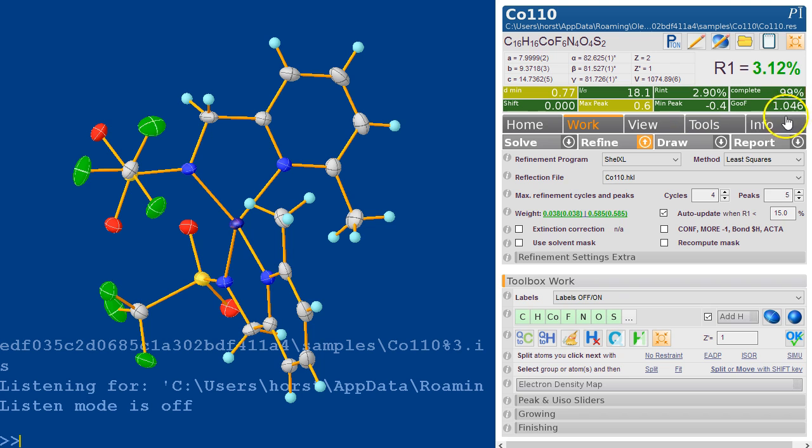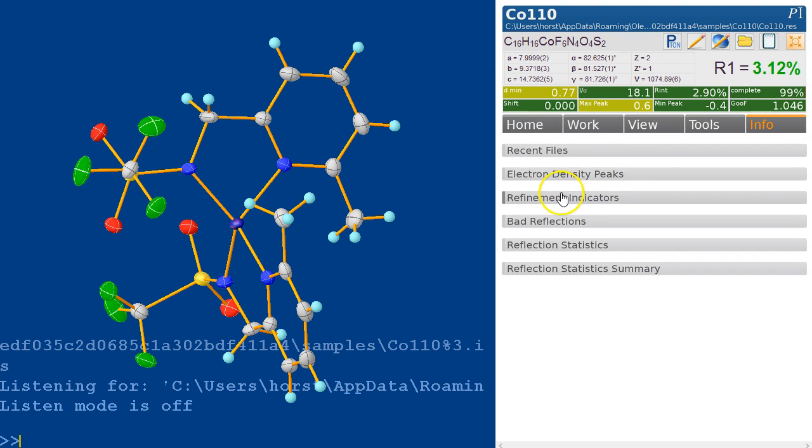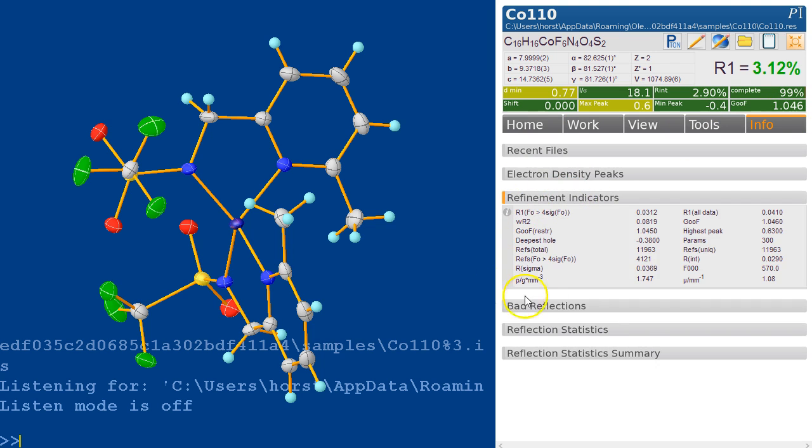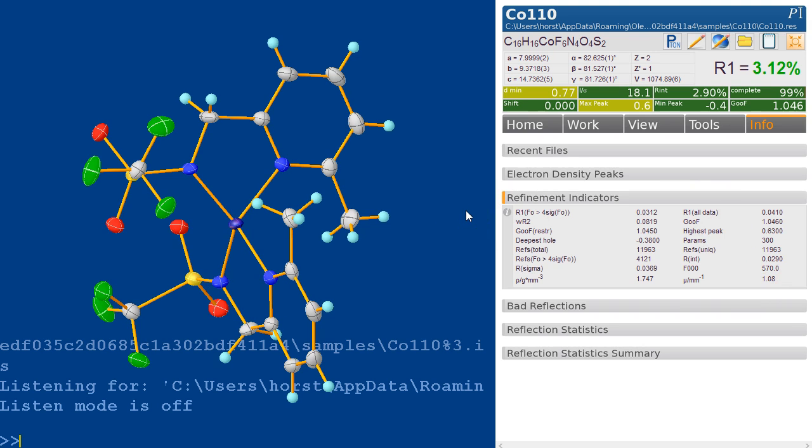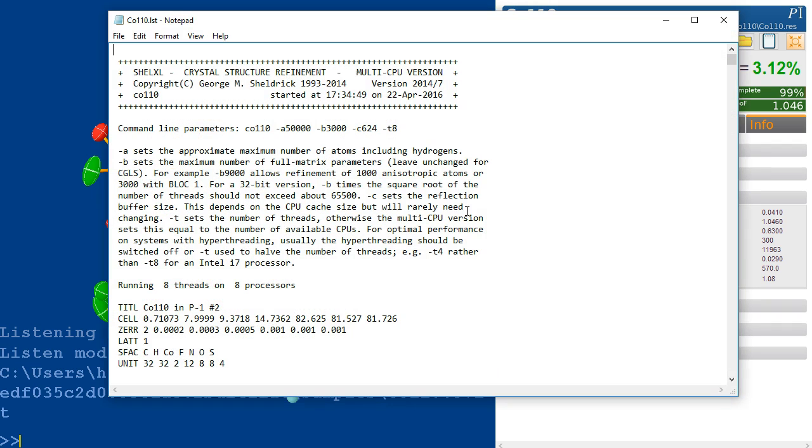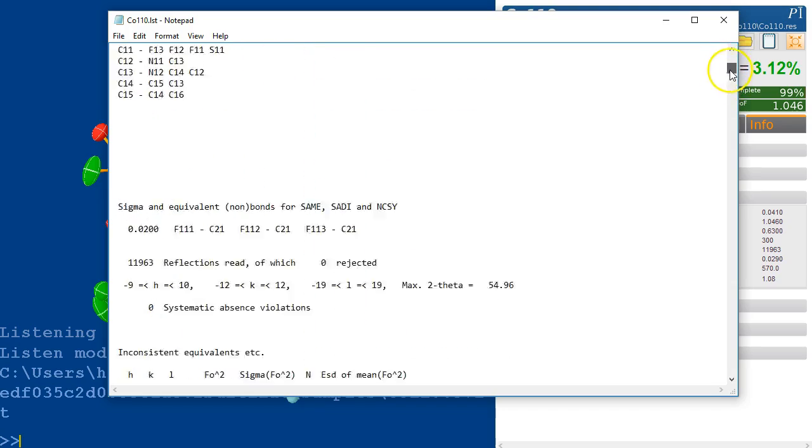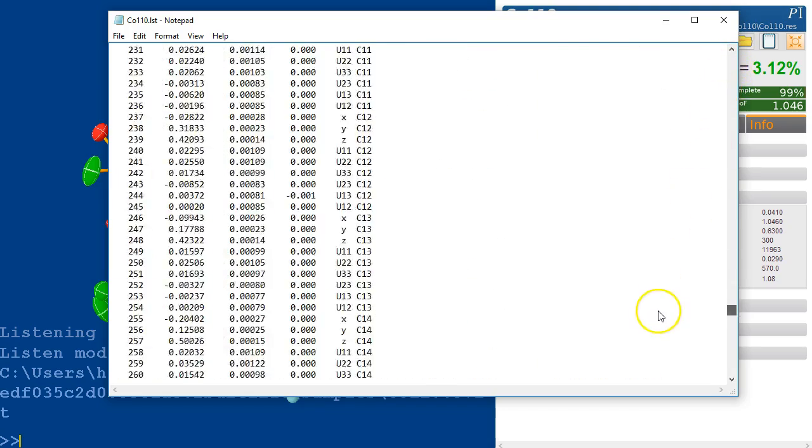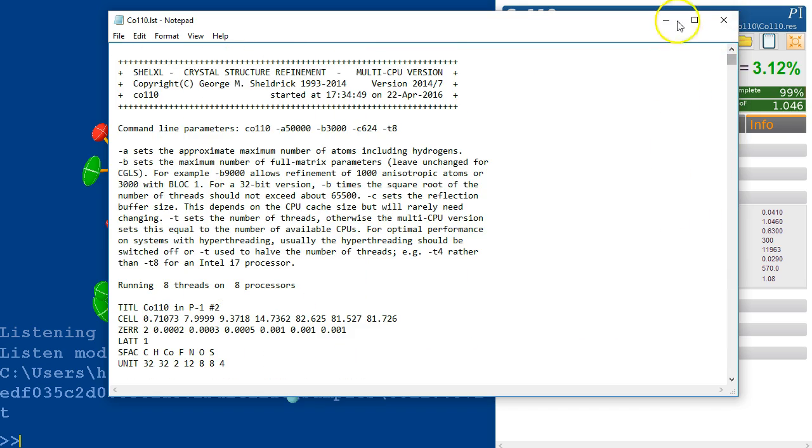We extract some information out of the files, for example, the refinement indicator. So this is a quick view into the listing file. Of course, if you did want to examine the listing file, it's edit LST. So this brings up the full listing file as ShellX has produced it. You can look at this file here.